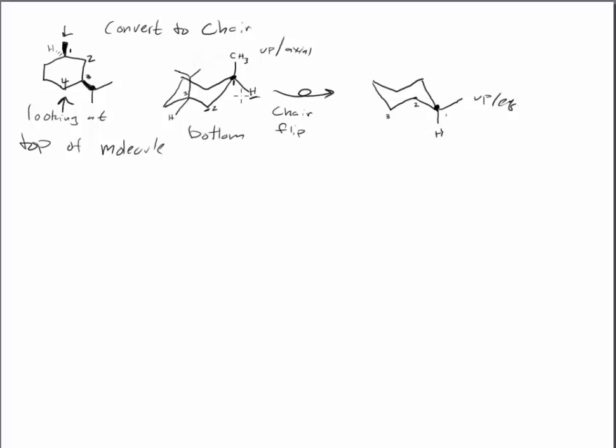Down and axial, instead of down and equatorial, as we did be in the beginning, is our hydrogen. Same thing with carbon 3. Up now is equatorial. Down is axial. And so this is our chair flip.